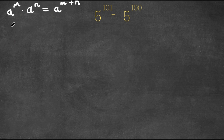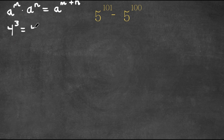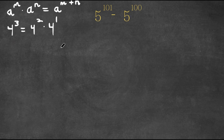So let's say we have 4 to the power of 3. This can be written as 4 squared times 4 to the power of 1, because when you multiply these two, the exponents add up and 2 plus 1 adds up to 3.